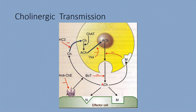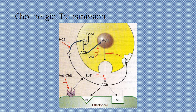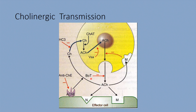Some of the released acetylcholine binds to muscarinic receptors on the pre-synaptic membrane, providing negative feedback that inhibits further release. Acetylcholine also acts on post-synaptic receptors — different receptor types will be discussed later. Importantly, botulinum toxin inhibits the release of neurotransmitter, and therefore can produce skeletal muscle relaxation.